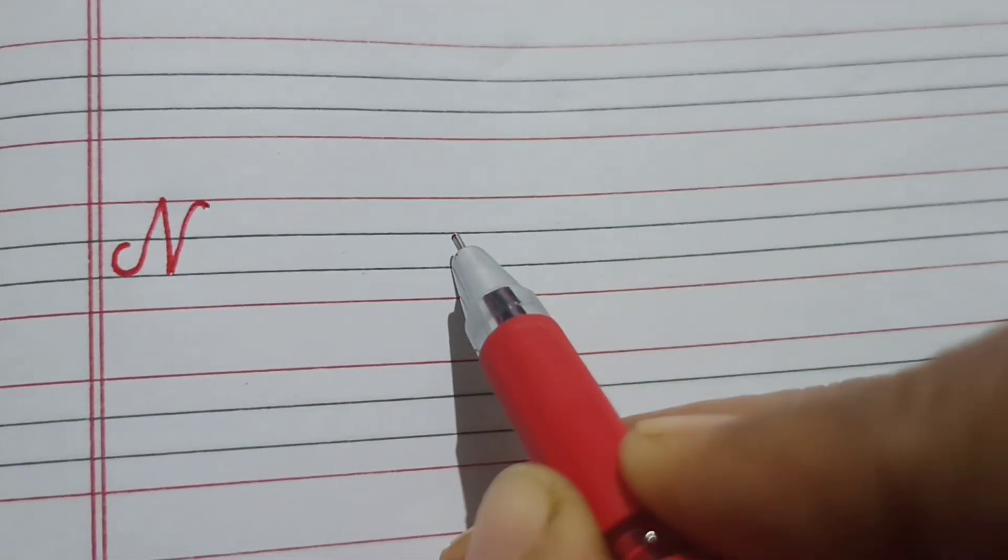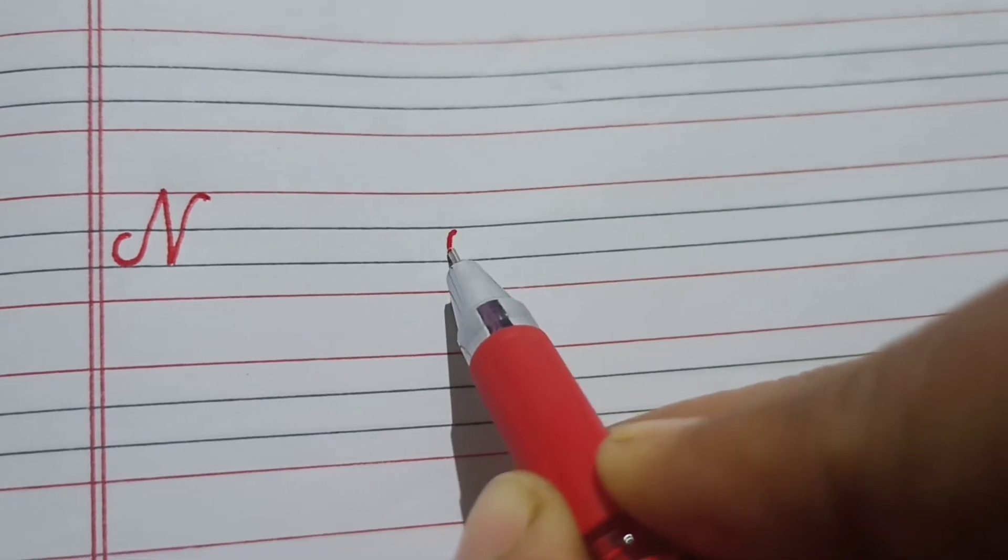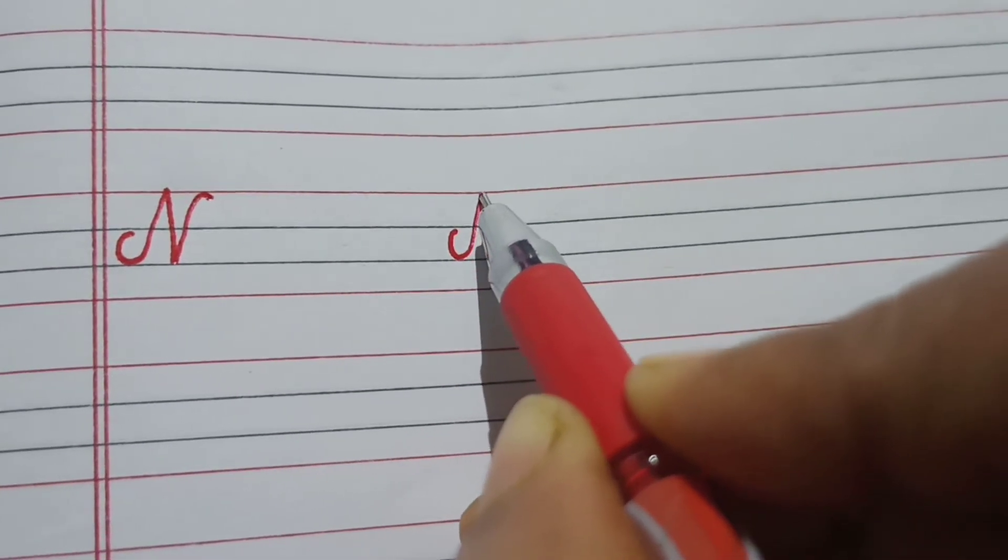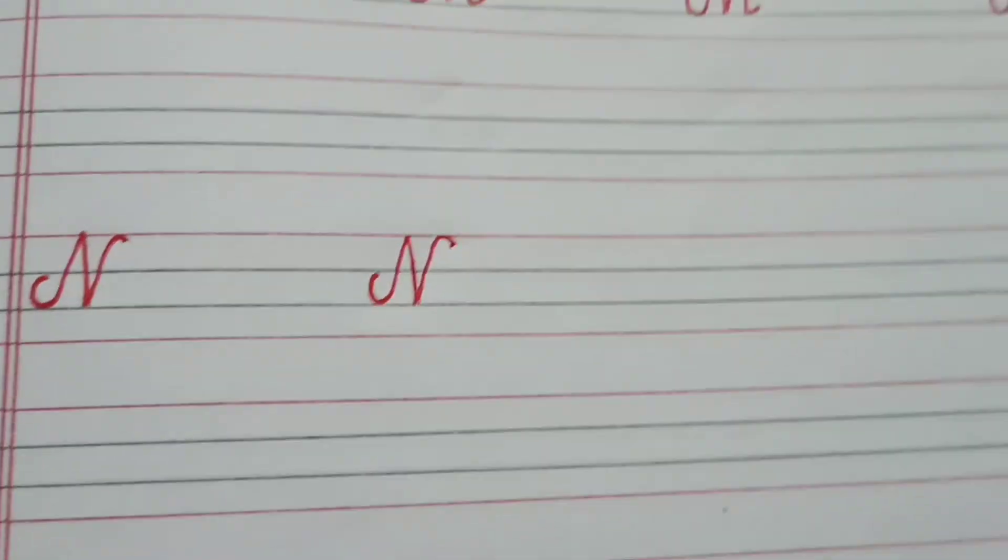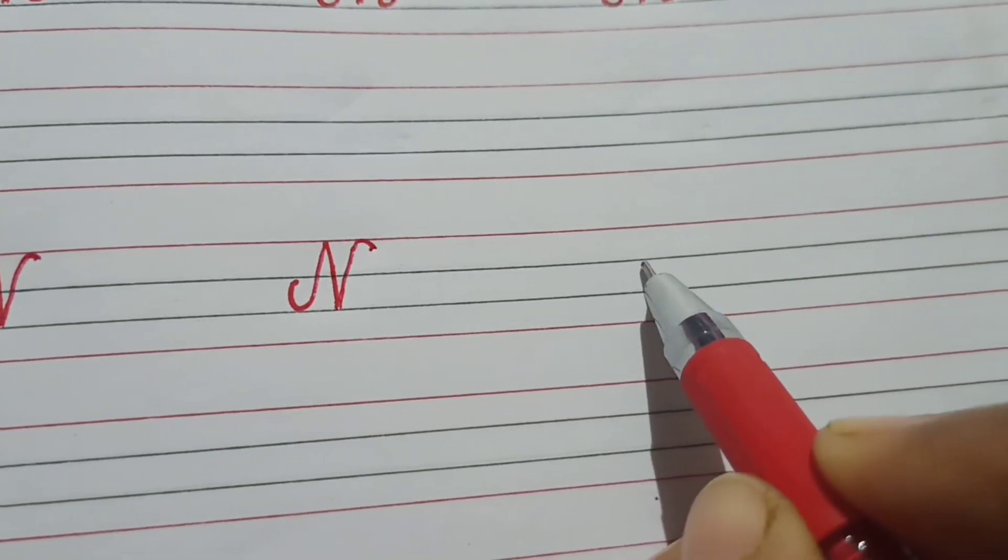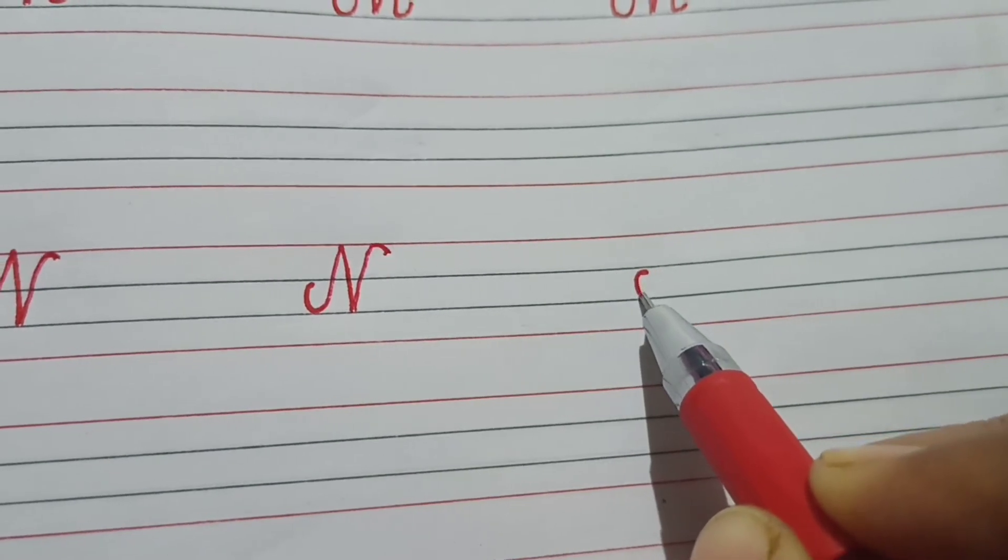Again, the same N is like M. You have to go up, come down, go up and turn. N. N. N for nest. N for nose. N. What is this? N.